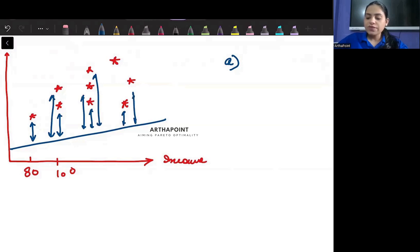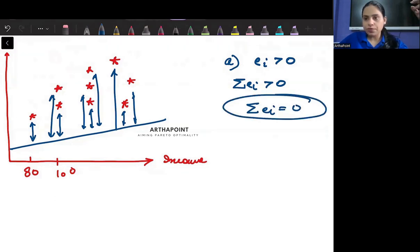The gap between actual and predicted value tells me the error term, right? So when all actual values, actual values are represented through the red dots, when all actual values are above the regression line, we realize that the error terms are all positive. If the error terms are all positive, the sum of the error terms will also be positive. And we know through the properties that the sum of error terms should be zero. There should be some error which should be positive, some error which should be negative.